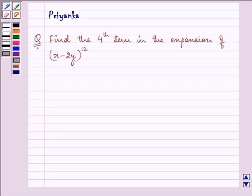Hi and how are you all today? The question says, find the fourth term in the expansion of (x - 2y)^12.